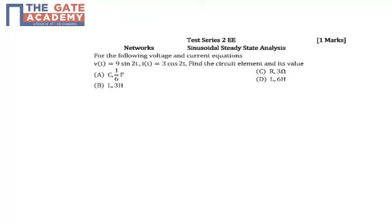The problem gives the following voltage and current equations: V(t) = 9 sin(2t) and I(t) = 3 cos(2t). Find the circuit element and its value.